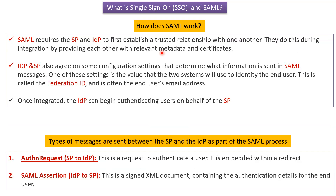How does SAML work? SAML requires the SP and IDP to first establish a trusted relationship with one another. They do this during integration by providing each other with relevant metadata and certificates. The IDP and SP also agree on some configuration settings that determine what information is sent in SAML messages.